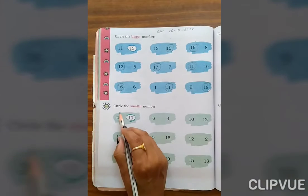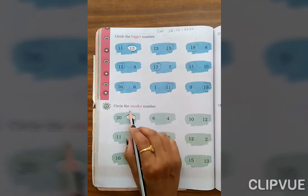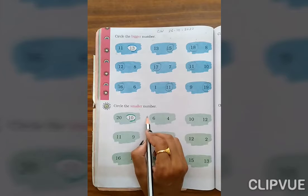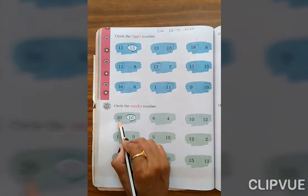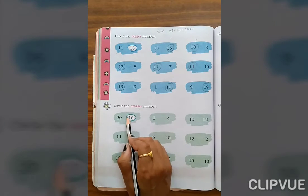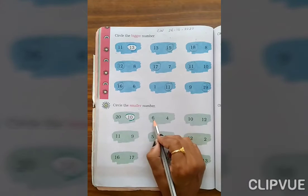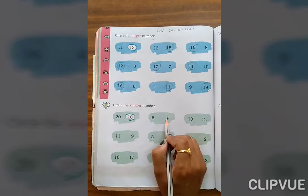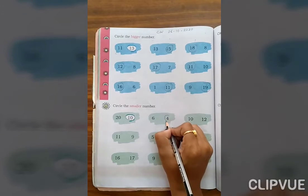Circle the smaller number. मतलब जो छोटा नंबर है, उसके उपर आपको circle करना है. Here one example: 20 and 10, so small is 10. Then circle it. 6, 4. Which one is small? Which one is smaller? 4. Then circle it.